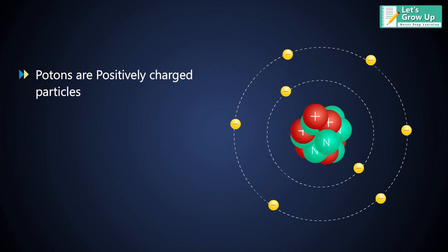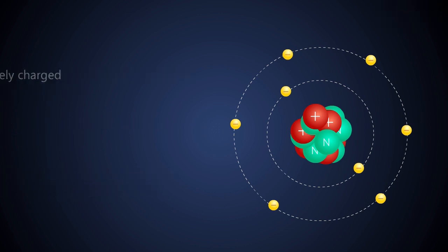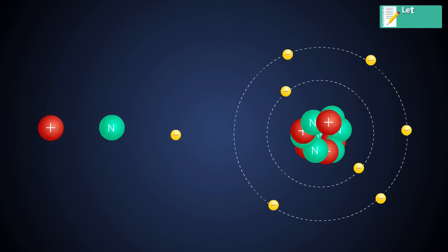Protons are positively charged particles and neutrons are neutral which have no charge. Electrons are negatively charged particles. Protons and neutrons are similar in mass while electrons are much smaller and lighter.